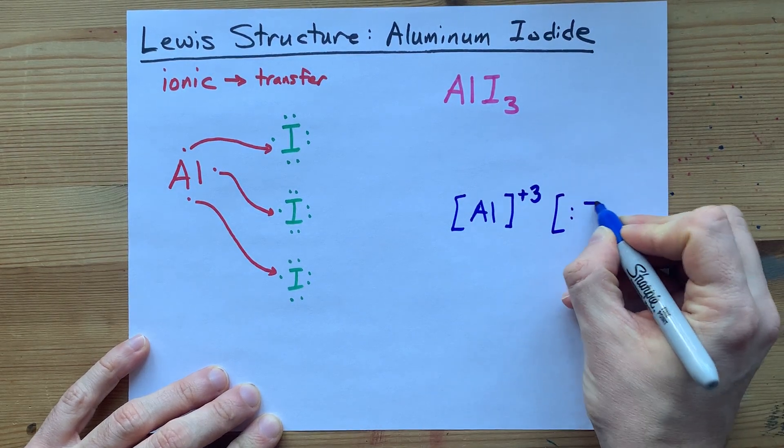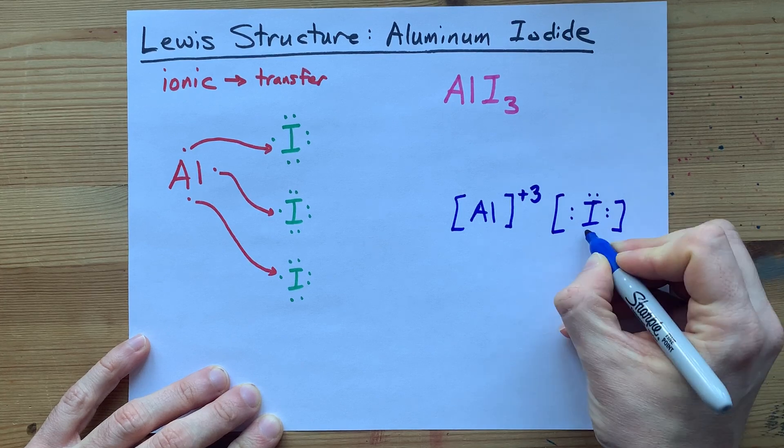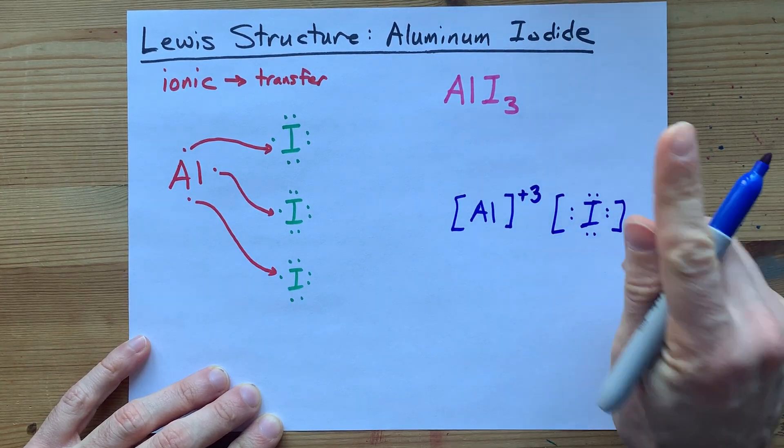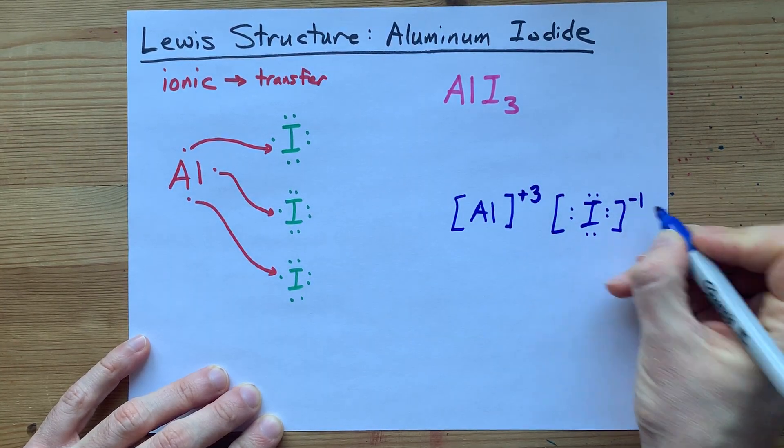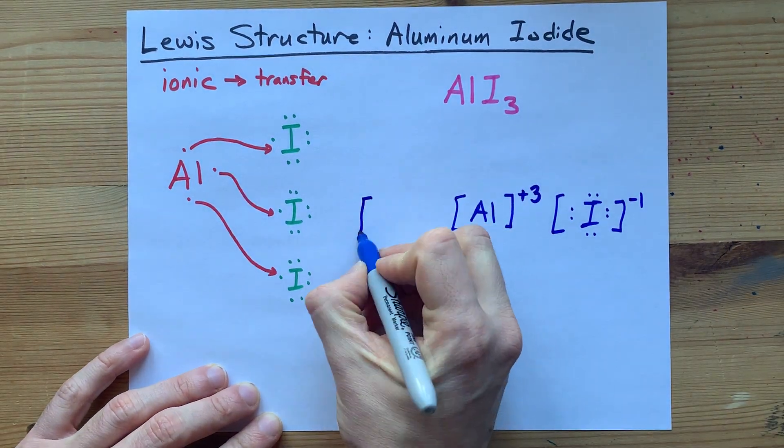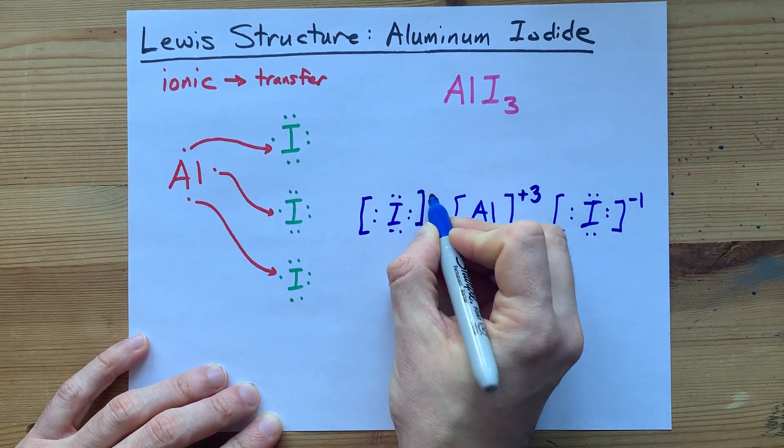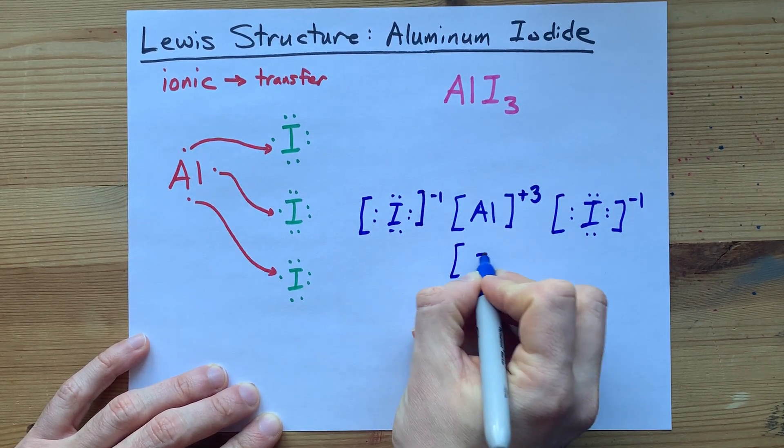Now, we also have to draw three iodine atoms. Each of the iodines now has eight valence electrons, and that's one more than they started with. So, that's a charge of minus one. Another iodine. Eight electrons. Minus one charge.